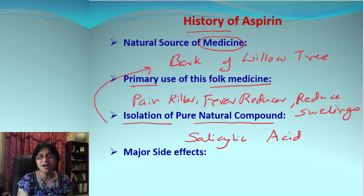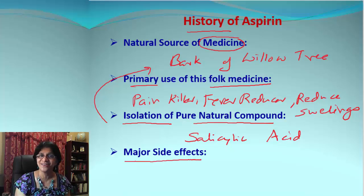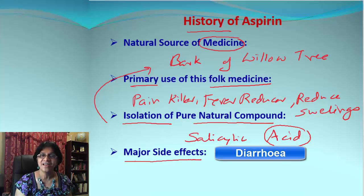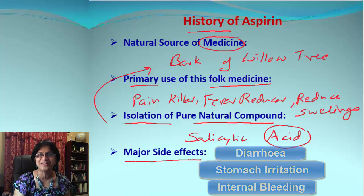After we found that compound we were able to do more research on aspirin development. Even though this natural medicine was popular, it had some major side effects because it was acidic, and acidic pH can do some harm. This natural medicine was causing diarrhea, stomach irritation, and sometimes even internal bleeding. All these were serious, damaging side effects.